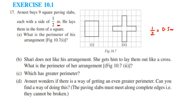Now here you can see each slab is of half, so this is 0.5, this is 0.5, the next one is 0.5, and the next one is 0.5. So 0.5 plus 0.5 plus 0.5 will become 1.5. So when you put three slabs on one side, this will become 1.5 meter.